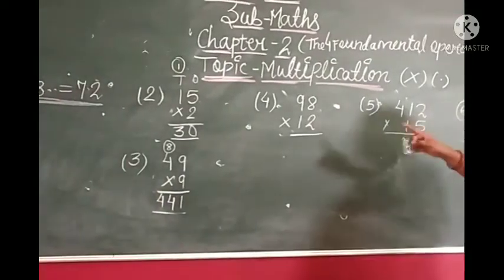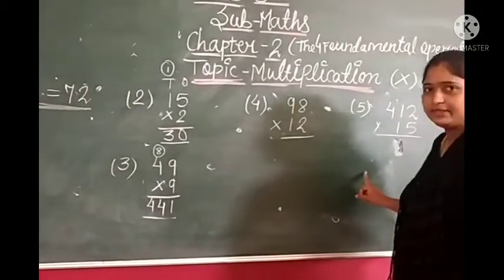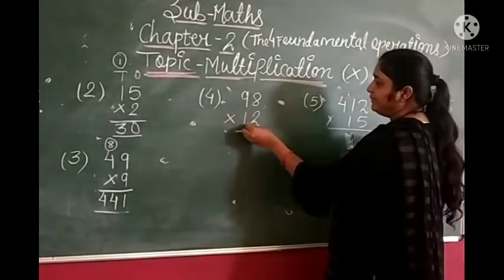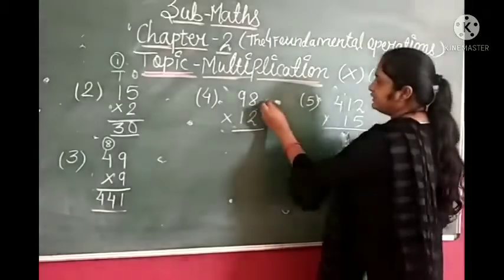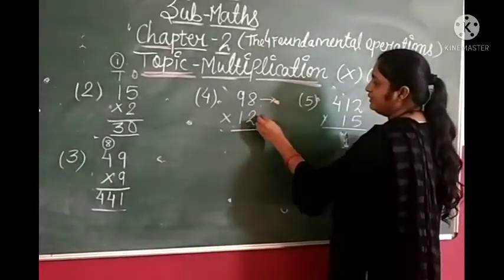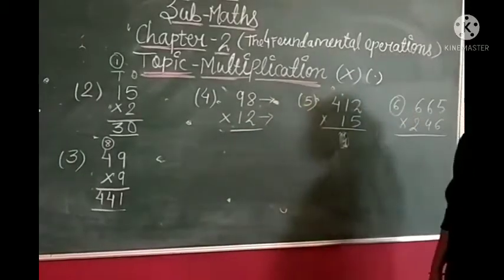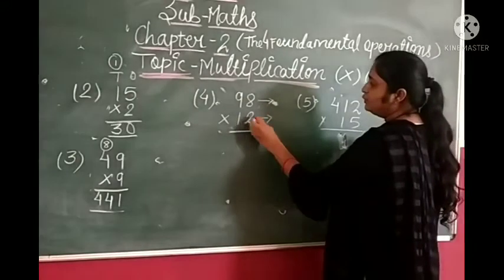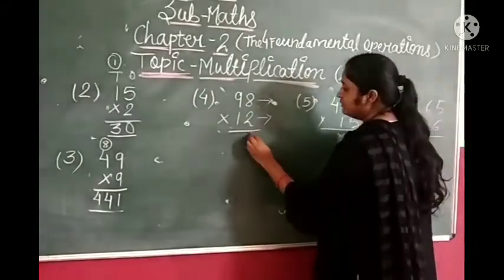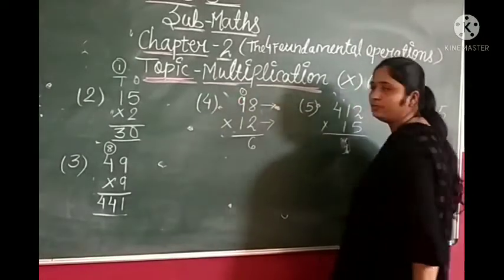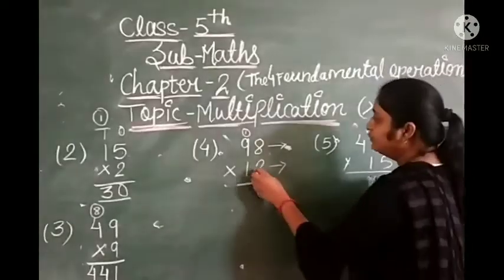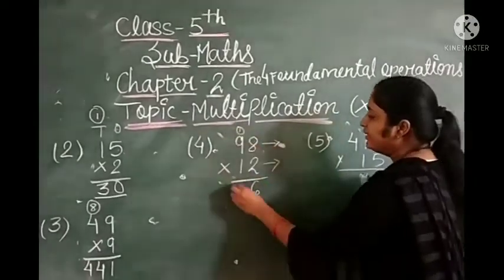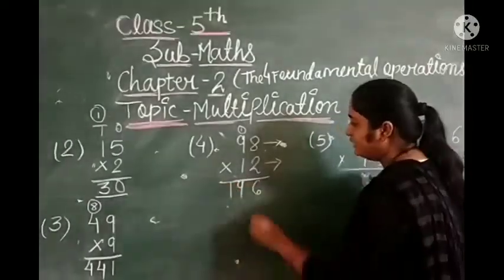Now let's start with 2-digit and 3-digit multiplication. Here we have 98 multiplied by 12. You can see 2-digit numbers here. First we multiply 2 with the ones digit: 2 eights are 16. Write 6 here and 1 carryover. 2 nines are 18, plus 1 is 19. So we write 19 here.